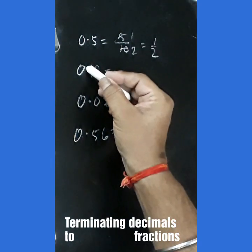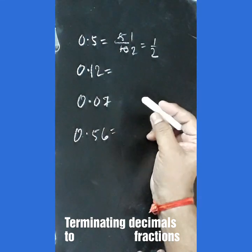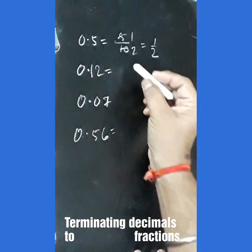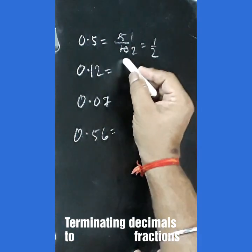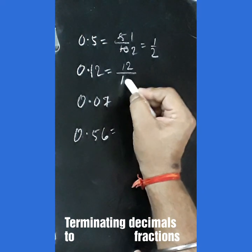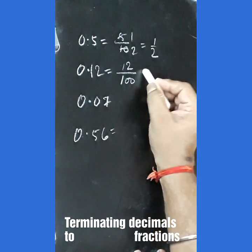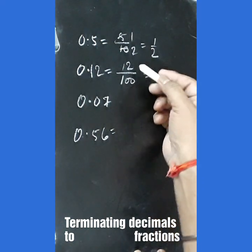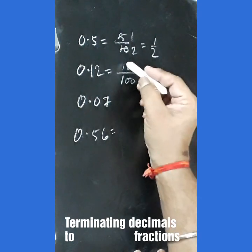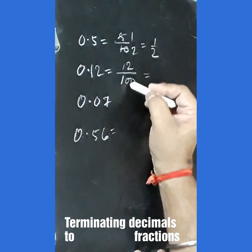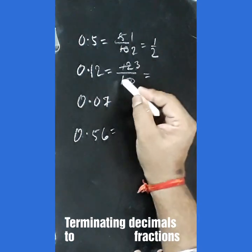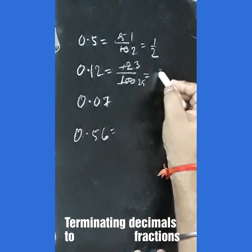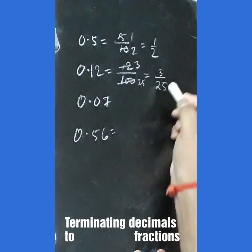For 0.12, we have two digits after the decimal. It will be written as 12 upon 100. Now we can write it in lowest terms by dividing both by 4, giving us 3 upon 25.